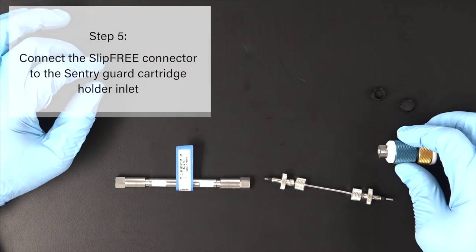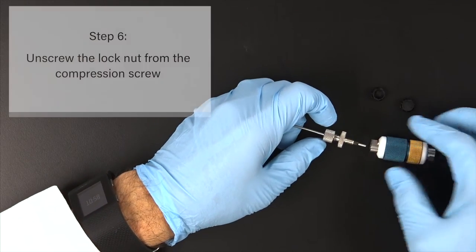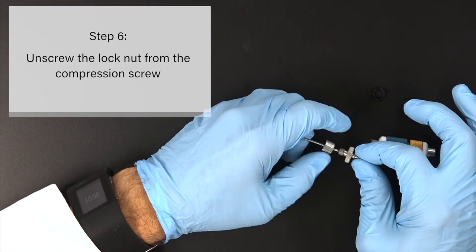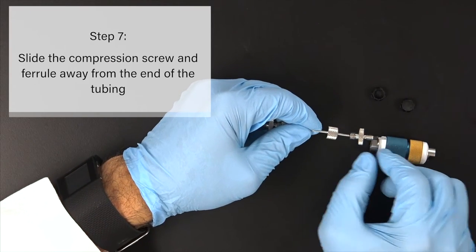Next, connect the slip-free connector to the Sentry Guard Cartridge Holder inlet. Unscrew the lock nut from the compression screw. Slide the compression screw and ferrule away from the end of the tubing.